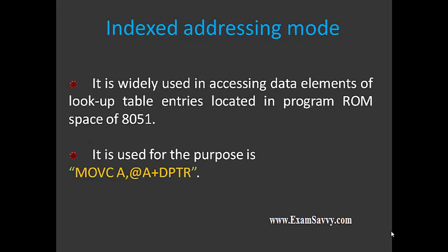The final one is indexed addressing mode. In the case of accessing code memory, ROM memory, we go for indexed addressing mode. In this memory, we cannot make any changes. So in that case, we need to use indexed addressing mode. It is mainly used for accessing data elements located in a lookup table in ROM memory. It is indicated by the instruction: MOVC A, @A+DPTR. MOVC indicates code memory — C indicates code memory. The data at @A+DPTR will be moved to A and stored in code memory. That is the final addressing mode.